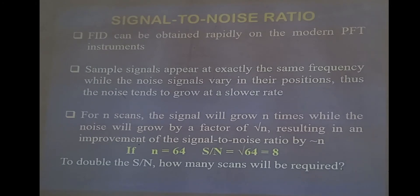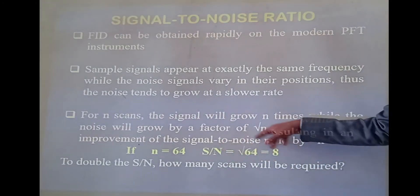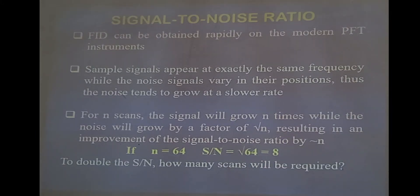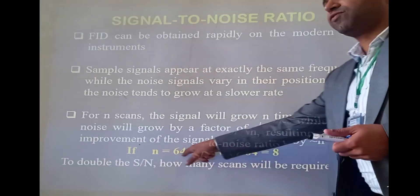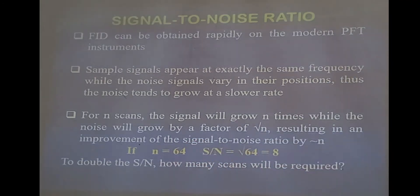So if you have n number of scans and n is equal to 64, then the signal-to-noise ratio is calculated by taking the square root of 64, which is equal to 8. So signal divided by square root of n: 64 divided by square root of 64 equals 8. If n is equal to 64, the signal-to-noise ratio is equal to 8.